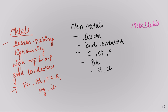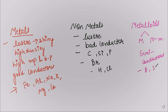Metalloids show properties of both metals and non-metals, which is their major distinguishing feature. They are mostly used as semiconductors. Examples include boron, silicon, germanium, arsenic, and antimony. We also have noble gases, which are mostly in a gaseous state and are very less reactive as they are chemically inert.